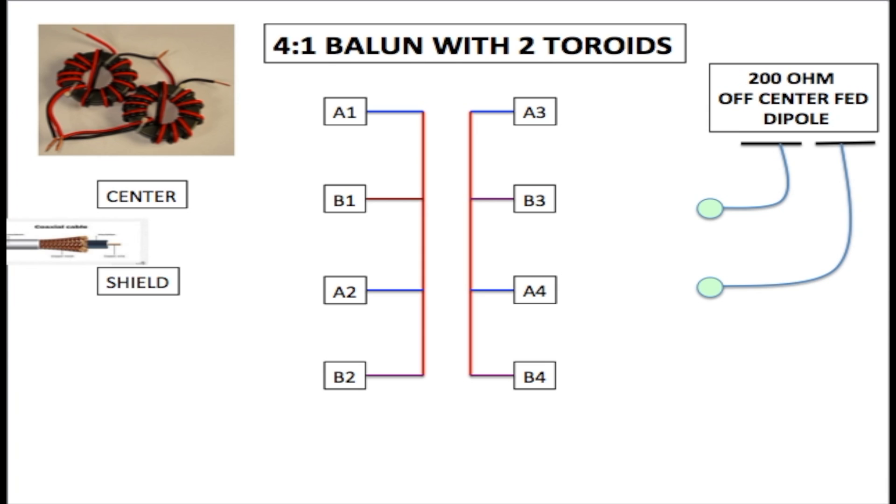So now we're designing the 4 to 1 balun with two toroids. This is our coaxial cable, this is the center conductor, this is the shield. We have A1, B1, A2, and B2, which represent the two toroids. A1 and B1 are wires connected to the first toroid, and A2 and B2 are wires connected to the second toroid. These are the input wires.